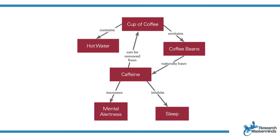This concept map example shows the concepts related to a cup of coffee, neatly presented in rectangles with arrows showing the relationships between concepts. You can see that each branch reads like a sentence, such as 'caffeine inhibits sleep.'